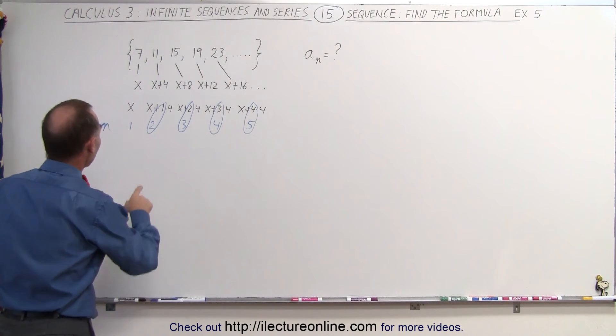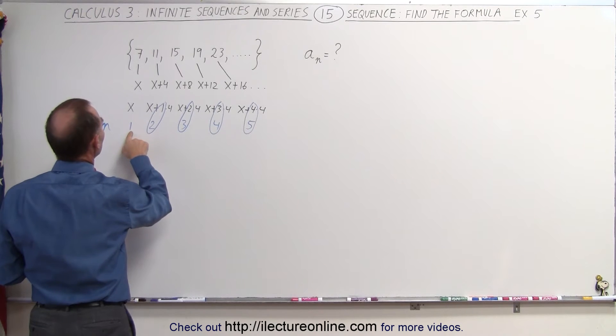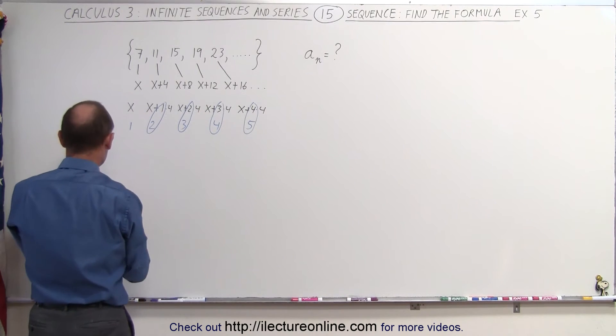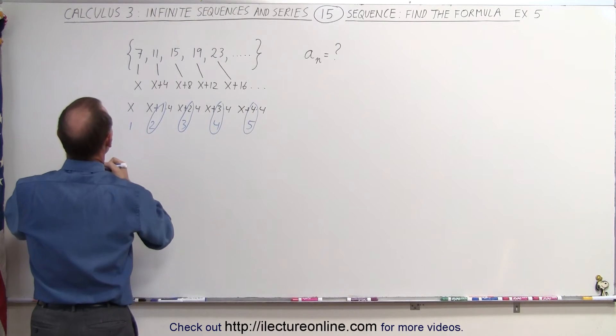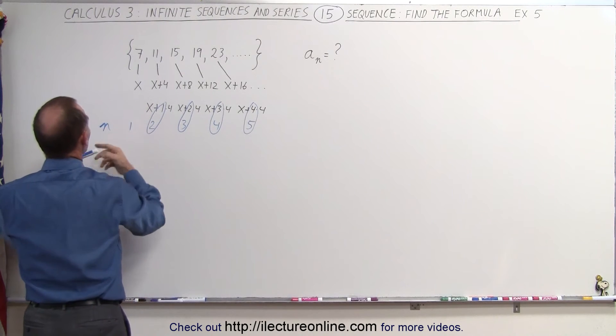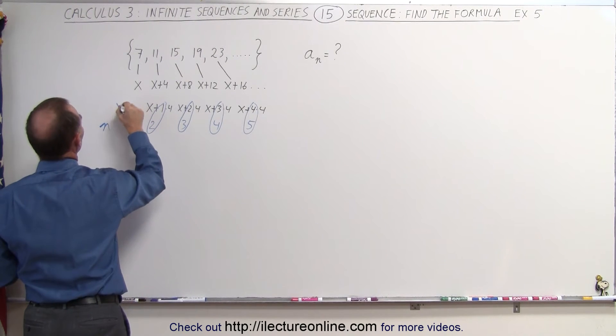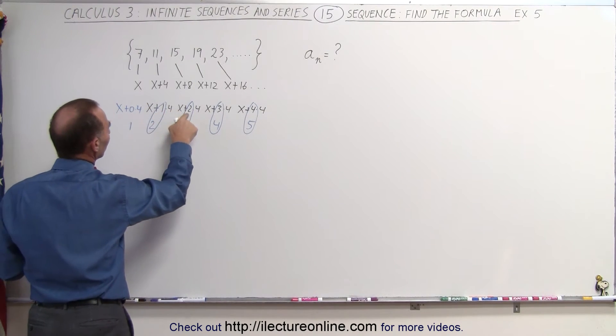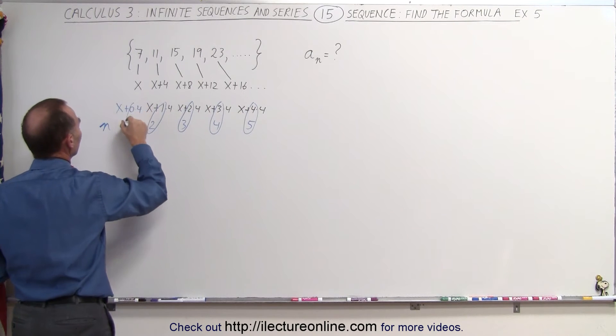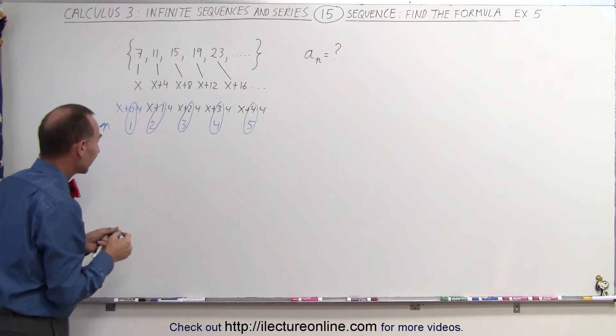Which means that here n would be, n is 1, but I need, this would really be, if I want to rewrite that, that would be equal to, let me move the x over, this can be written as x plus 0 times 4. So we have 0 times 4, 1 times 4, 2 times 4, and again, notice that the n is offset like that.